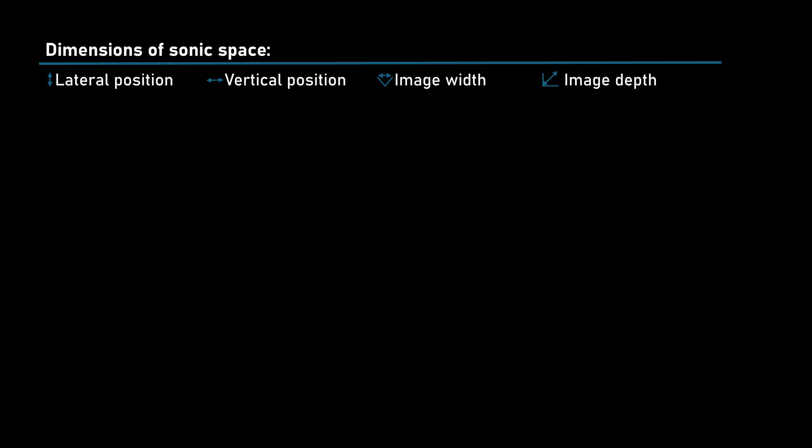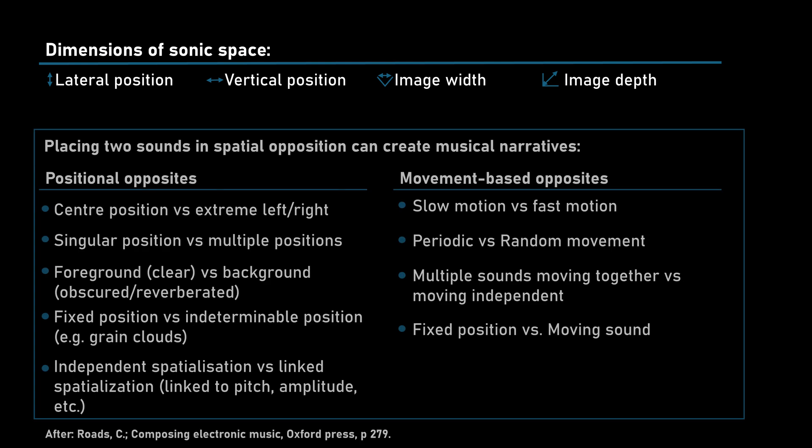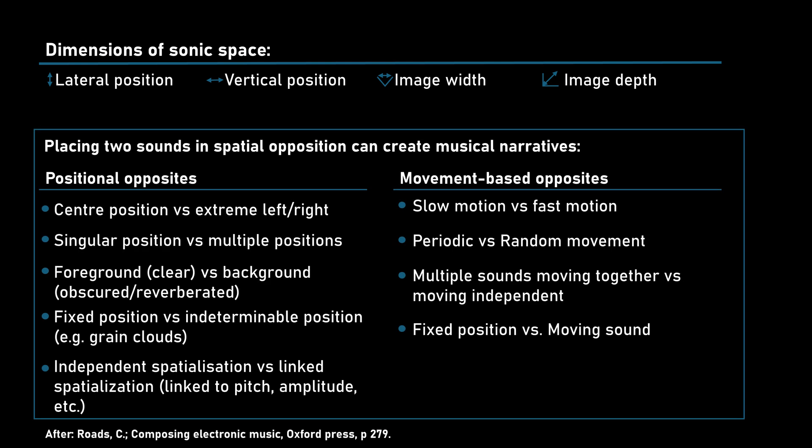We could think about putting each sound into a specifically designed space and then see how the combined soundscapes will feel. On a much more simplistic scale, we can think about sounds being put into the foreground and background, or off to the side, or about their movement in that space. Curtis Rhodes gives us a few technical parameters to compose with in his book Composing Electronic Music, mentioning the exploration of lateral position, vertical position, image width, and image depth. He additionally offers some compositional advice based on two sound elements having opposite behavior in space as a means to create compelling music.